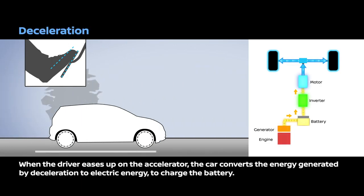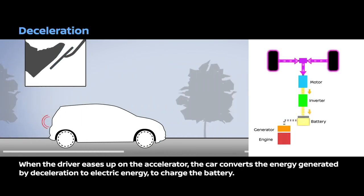When the driver eases up on the accelerator, the car converts the energy generated by deceleration to electric energy to charge the battery.